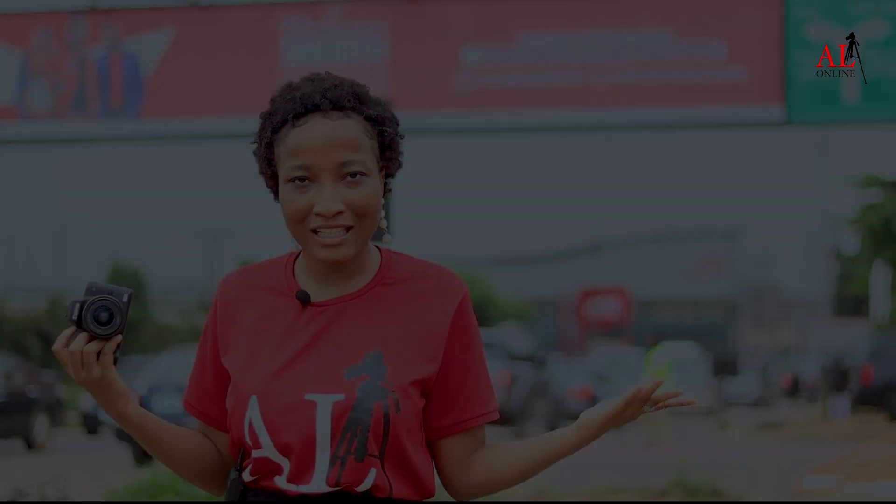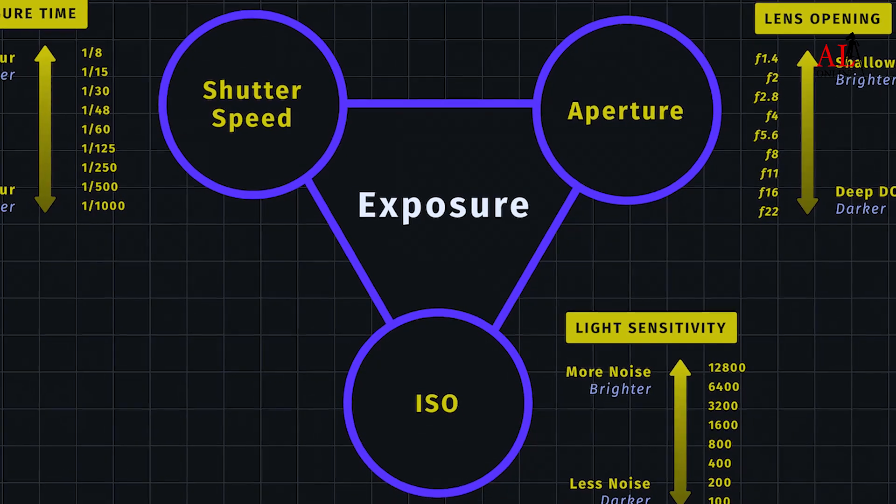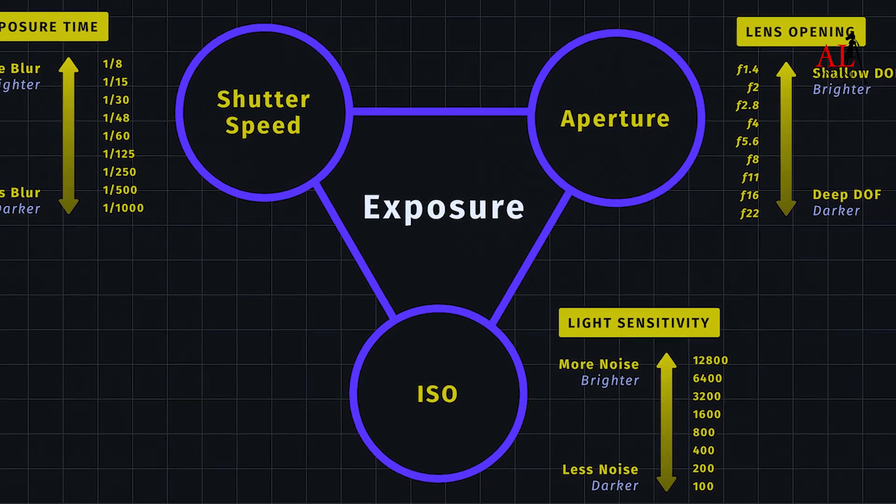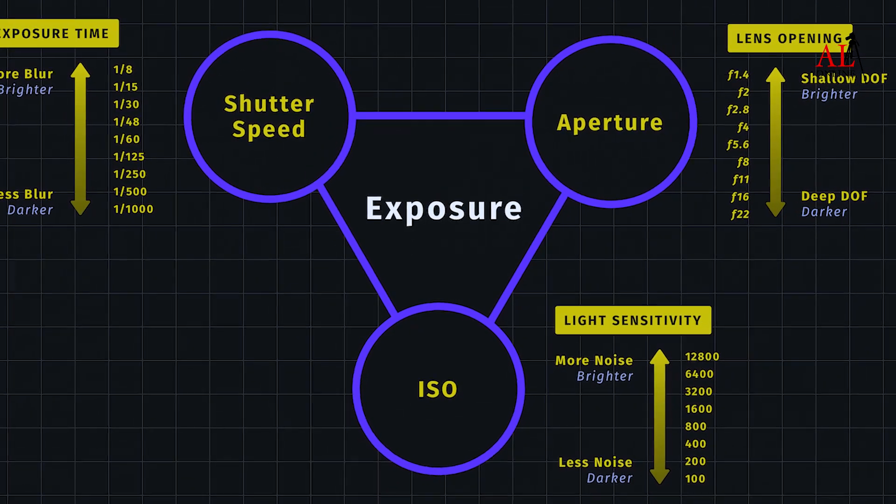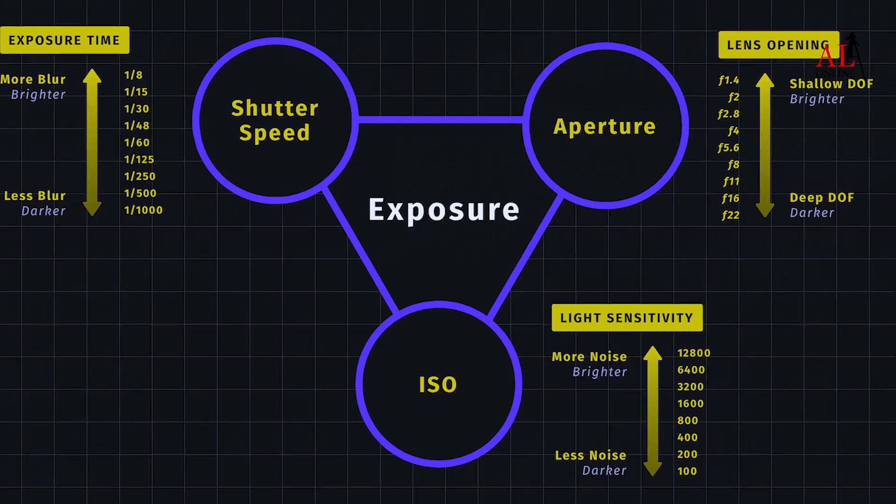Welcome back guys. I am going to be teaching you exposure in vlogging. Basically, exposure means how bright or how dark your video can get. We have the three exposure triangle elements, which are the shutter speed, the aperture, and the ISO. I am going to be demonstrating how those three work hand in hand in this video.